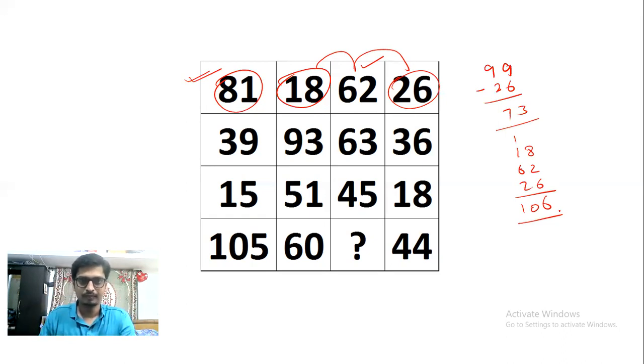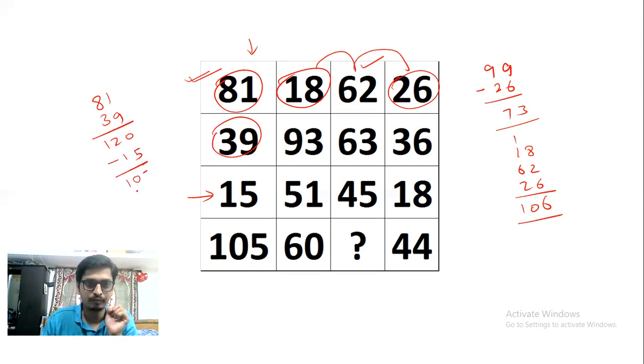So 81 plus 39. What is 81 plus 39? We get 120. Now you have 15 in the next, the third number is 15. Now if you subtract it, you get 105. Yes, this is working. But however, you have to check the second column also. What is 18 plus 93? 18 plus 93, we get 111. Now subtract 51 from this 111. Yes, we get 60.